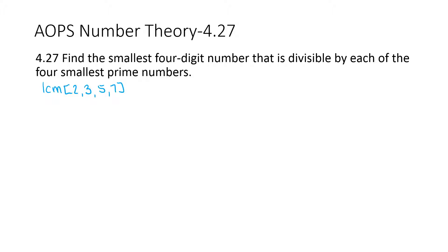That's equal to 210, because since they are all prime numbers, the lowest common multiple would be just the product of all four of them. So it's just 2 times 3 times 5 times 7, which is equal to 210.